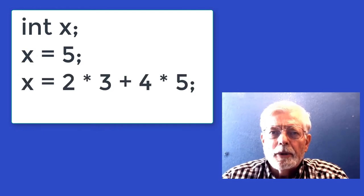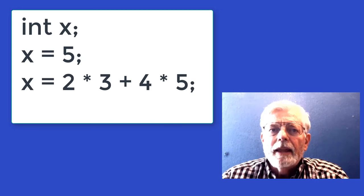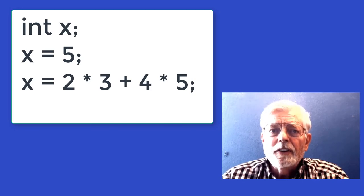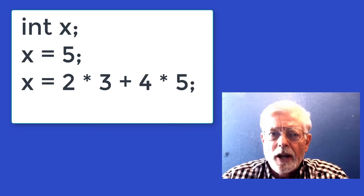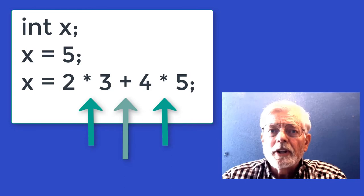Here is another example. x = 2 * 3 + 4 * 5. That computes multiplication and division before addition and subtraction. The multiplication operators (star) are at level 5 and occur before the addition operator (plus), which is at level 6.